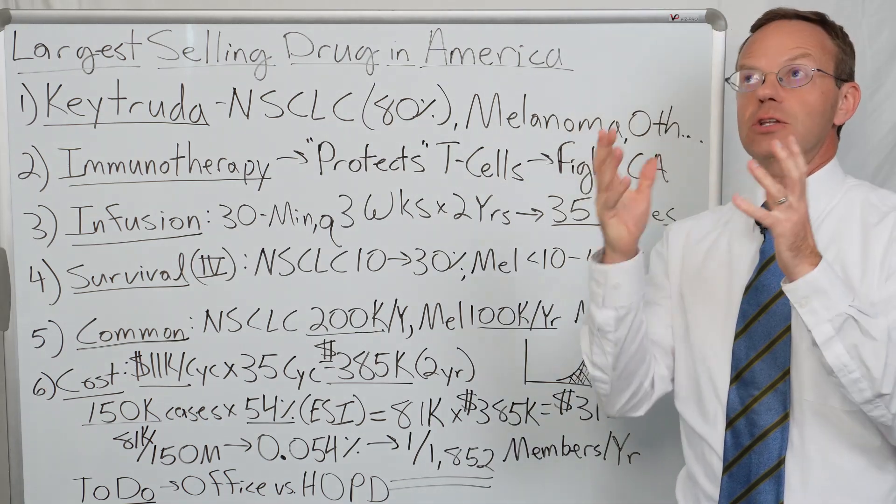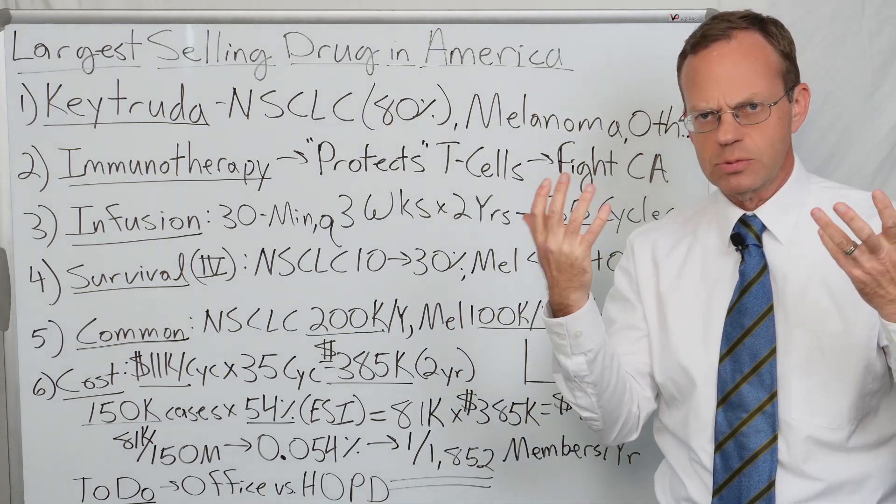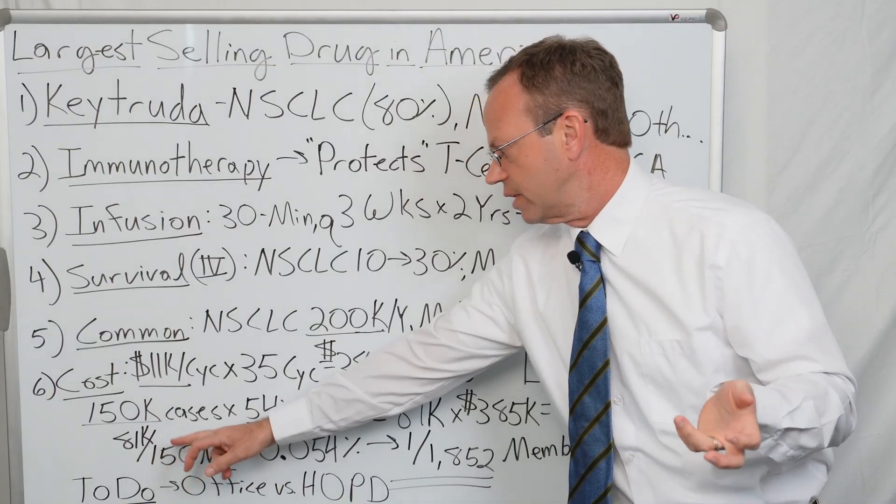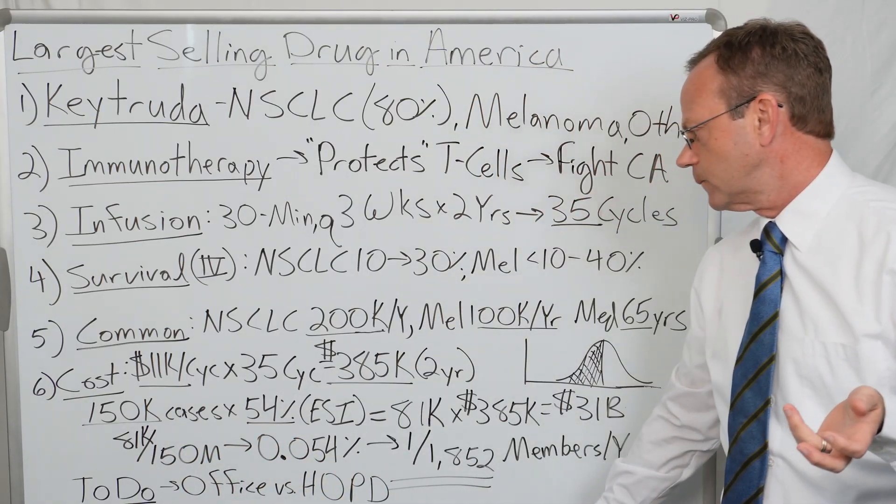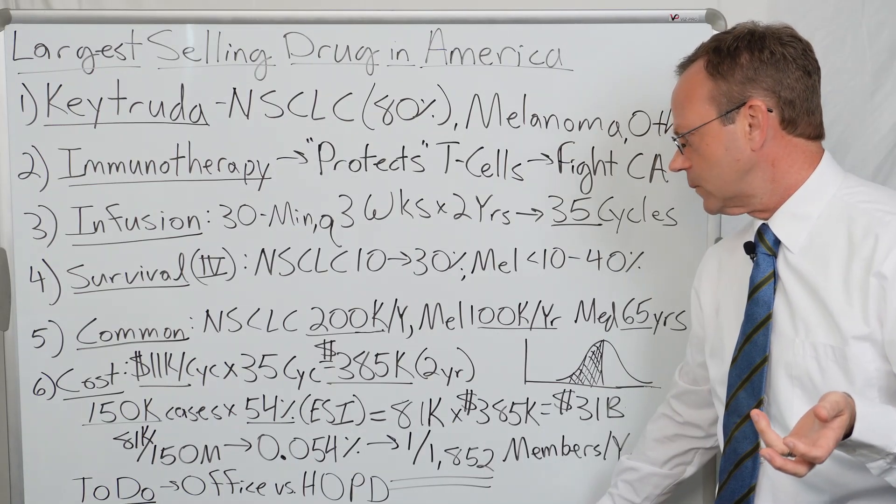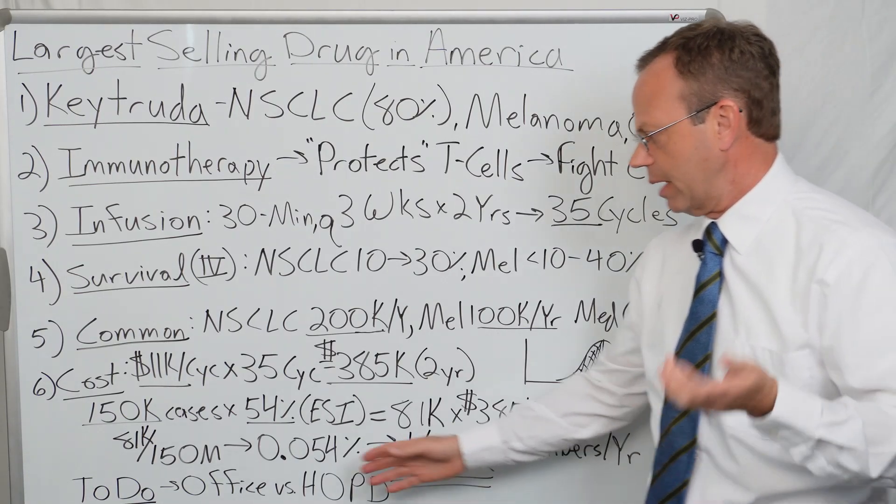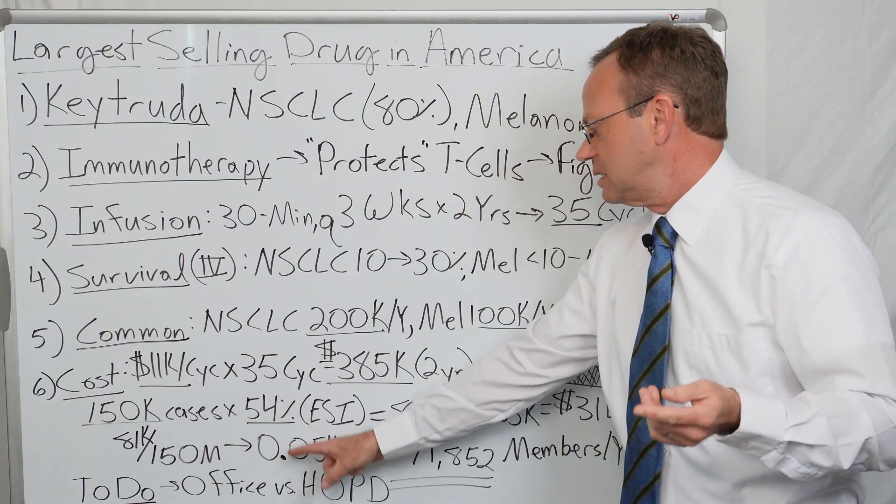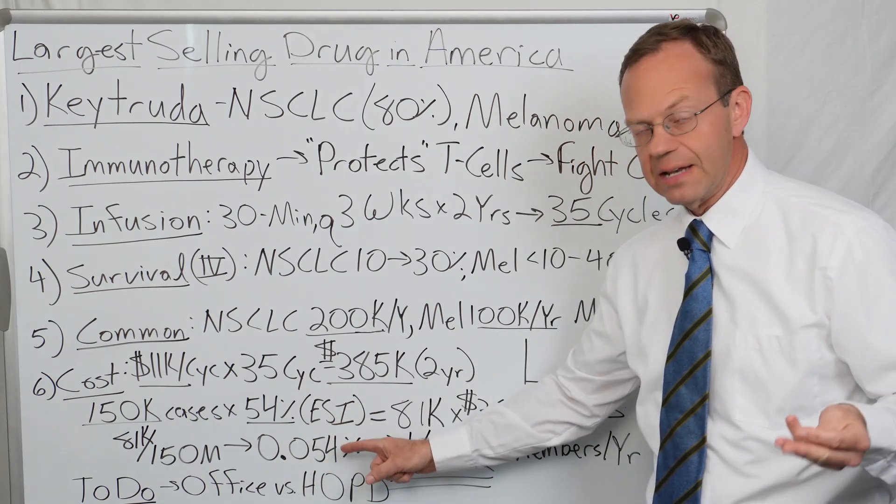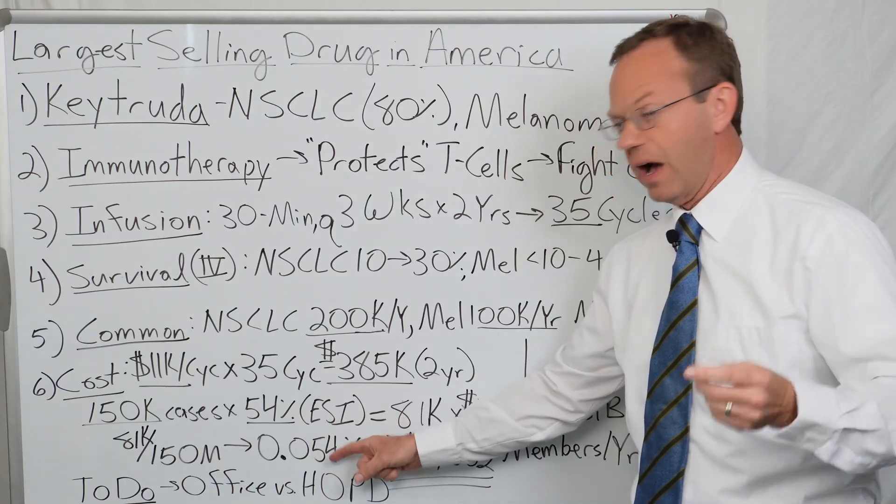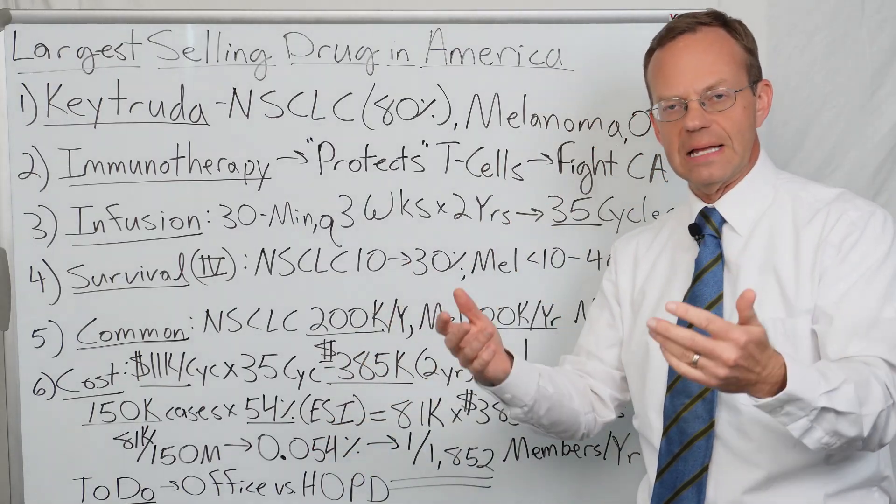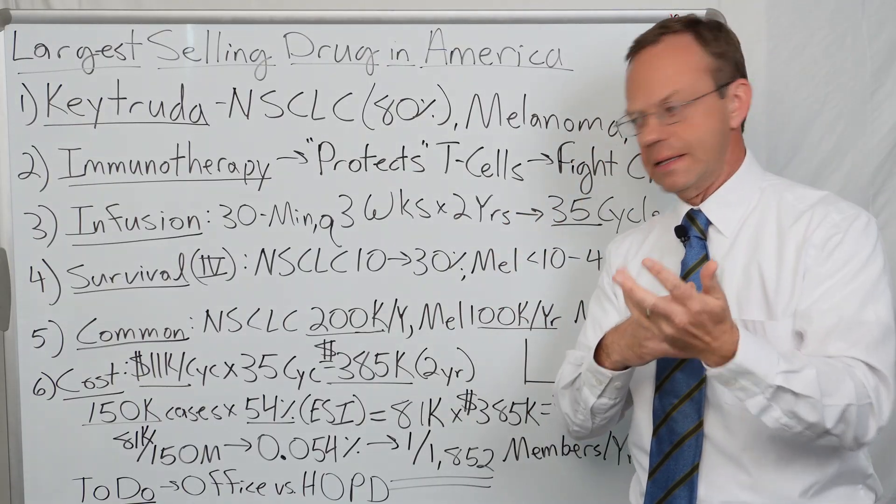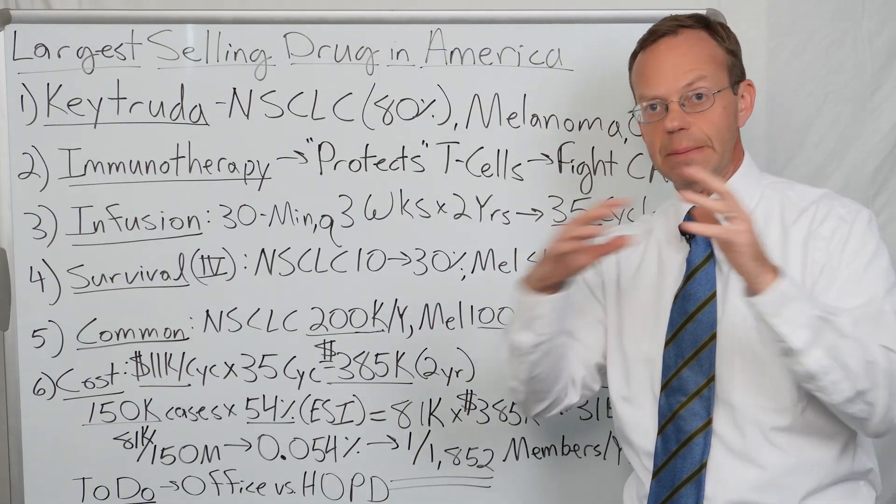You don't care about all employers, you care about your specific employer. If you take the 81,000 cases over the 150 million people on employer sponsored plans in America, that gets you 0.054%. That ends up being about 5.4 people for every 10,000 people on a plan. If you divide 10,000 by 5.4, that means one person out of every 1,852 people on a plan every year will be diagnosed with lung cancer or melanoma.